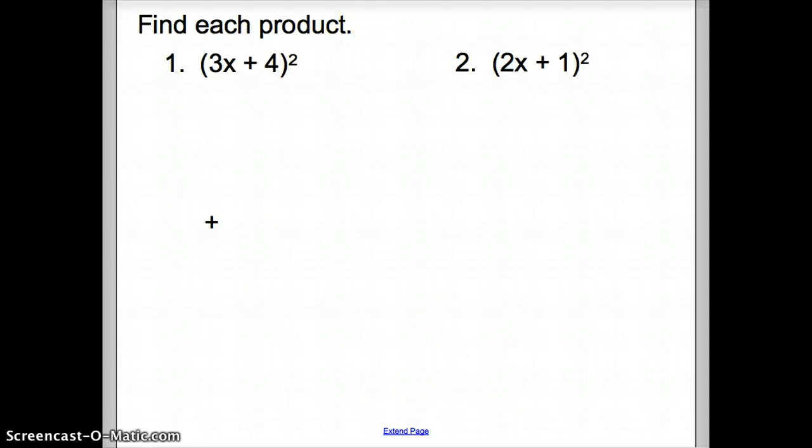Remember, we set them side by side and multiply them out. So let's try an example. Here, we're asked to find each product. With this guy, we have 3x plus 4 squared. Well, we start off by going 3x plus 4 times 3x plus 4.